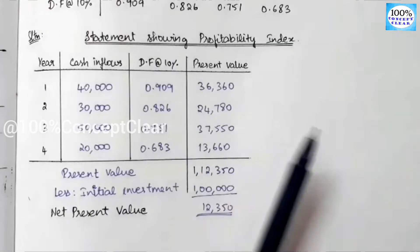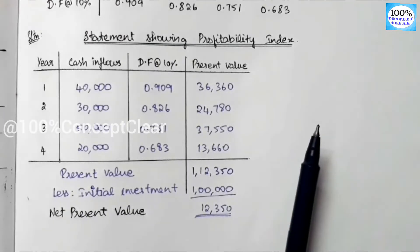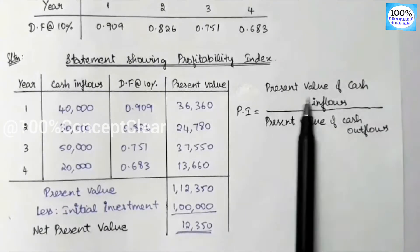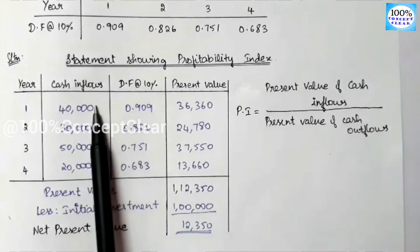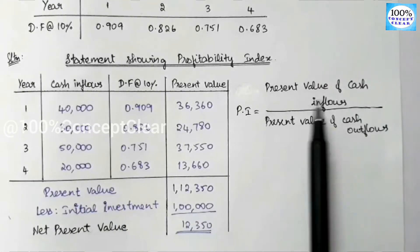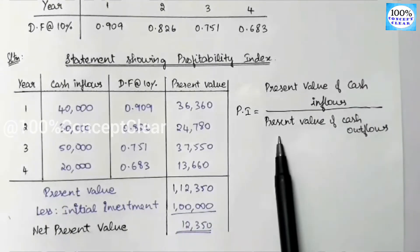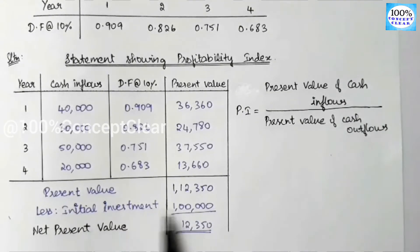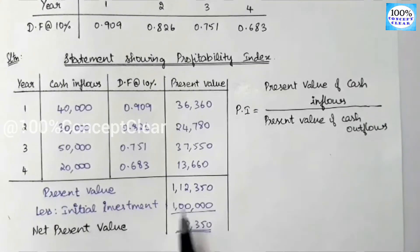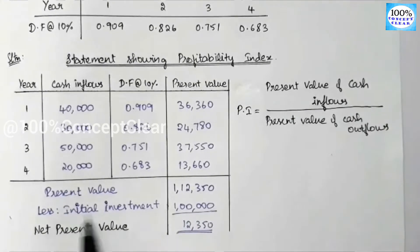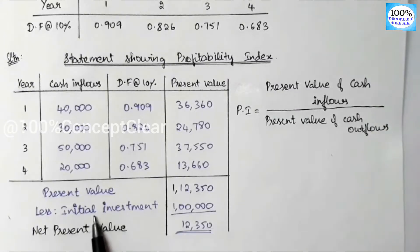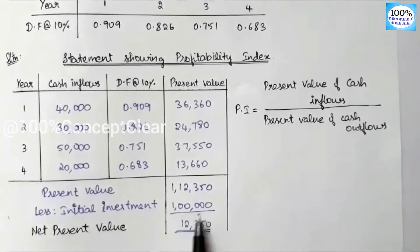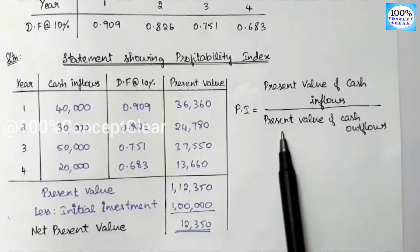But the question asks for the Profitability Index. The formula is: Profitability Index = Present Value of Cash Inflows divided by Present Value of Cash Outflows. The Present Value of Cash Inflows is 1,12,350. For cash outflows, the initial investment of 1 lakh is used, since it is invested at the start of the project and is already a present value.